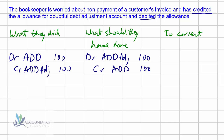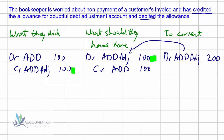Comparing the two columns, we should have had a debit in the adjustment account but actually we have a credit. To fix it, we need to debit the allowance for doubtful debt adjustment account. We need a debit of 100 but currently we've got a credit of 100, so to fix it we need to double it — put 200 here. The credit would be to the allowance itself with 200. There's no effect on suspense in this case because originally a double entry was performed, so everything balances.